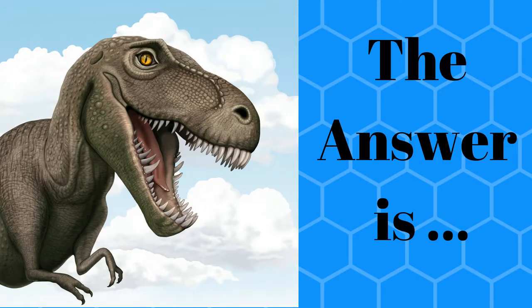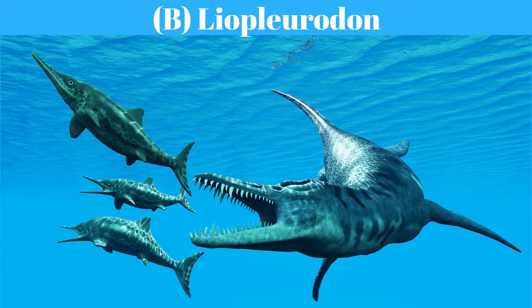The answer is B, Liopleurodon. Liopleurodon was an apex predator in the Jurassic period. It grew to about 30 feet long and was an unusually fast swimmer.